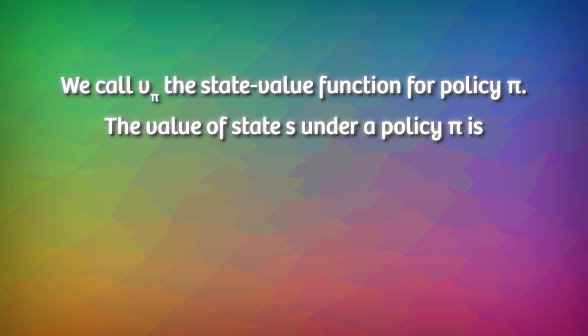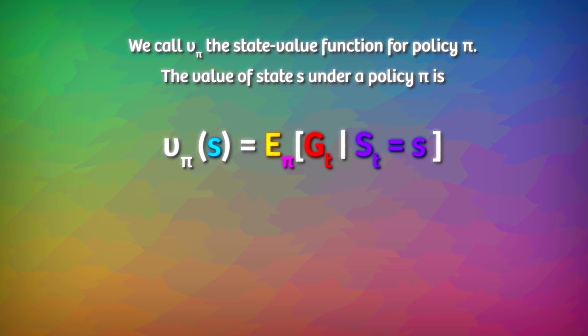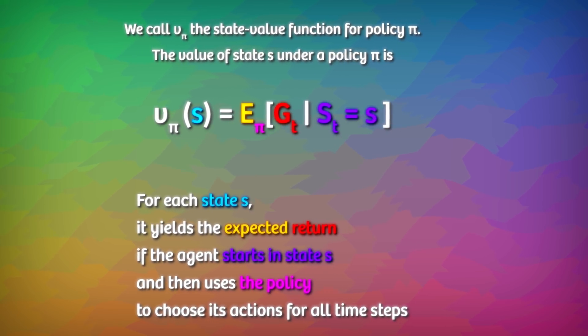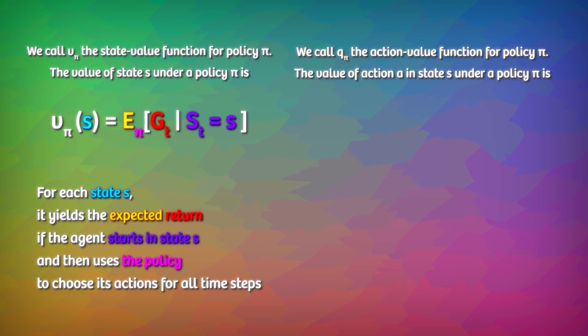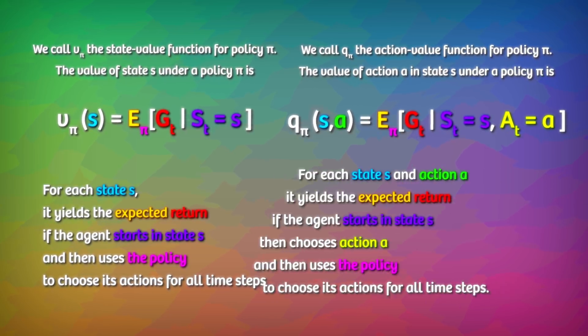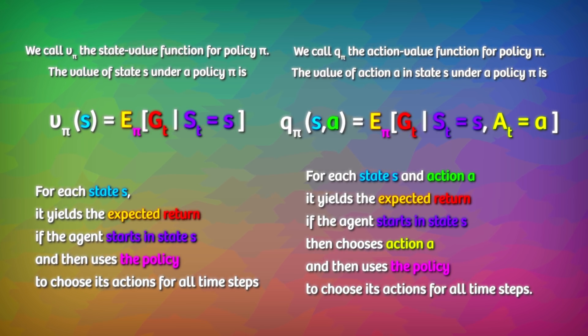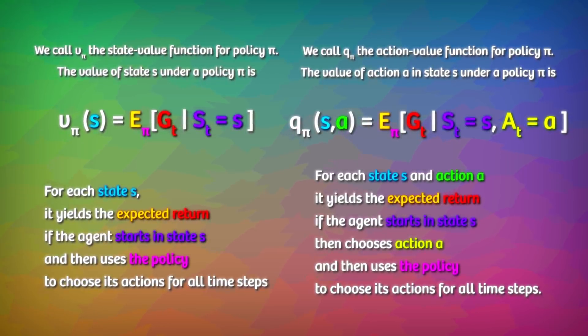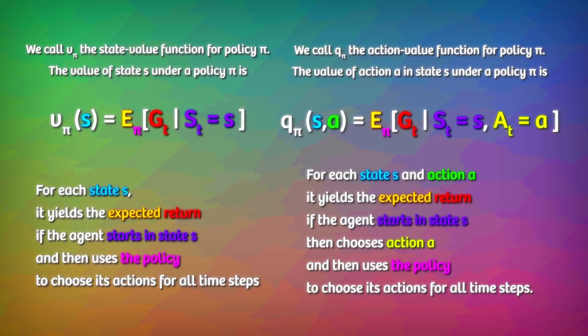There is another type of value function we should discuss though, the action value function. While the state values are a function of the environment state, the action values are a function of the environment state and the agent's action. For each state s and action a, the action value function yields the expected return if the agent starts in state s, then chooses action a, and then uses the policy to choose its actions for all time steps. In the state value function, we kept track of the value of each state using one number. In the action value function, we'll use four values for each state, each corresponding to a different action: up, down, left, or right.